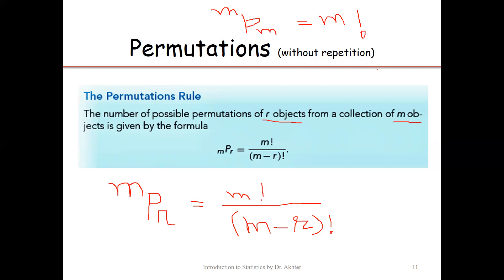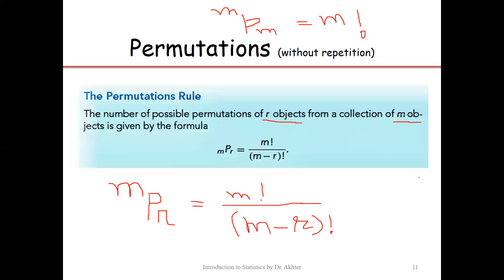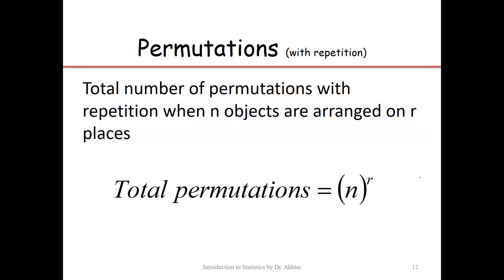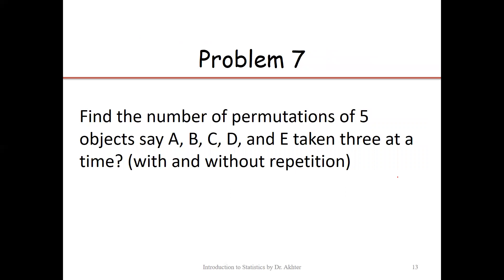Just as k objects on k places can be done in k! ways, m objects on m places can be arranged in m! ways. For permutation with repetition — arranging n objects on r places with replacement — the formula is n raised to the power r. So there are two permutation formulas: nPr for without repetition, and n^r for with repetition.